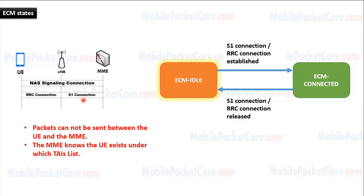Because in ECM idle state the NAS signaling connection is not established, there are no packets that can be sent or received between the UE and the MME. In addition, the MME knows the location of the UE only to the level of a list of tracking areas — meaning the MME knows the UE exists in which list of tracking areas, but does not know which cell the UE is in under that list of tracking areas.